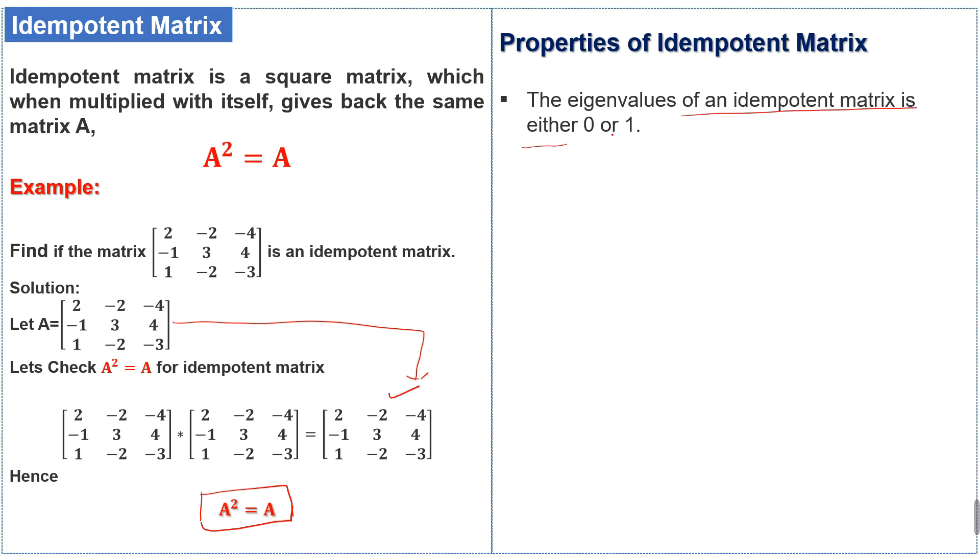The trace of an idempotent matrix is equal to the rank of the matrix. This is the trace of the matrix: two plus three plus three plus three, this will be equal to two, and the rank of the matrix will also be two.